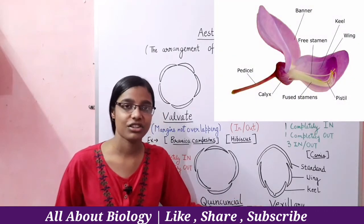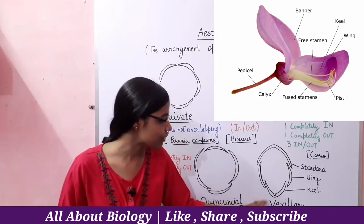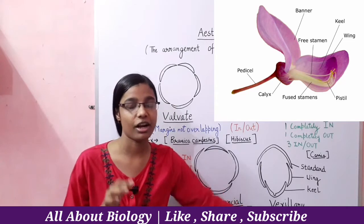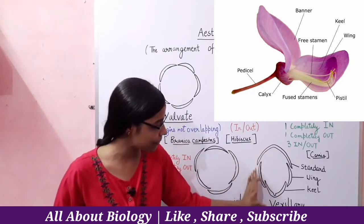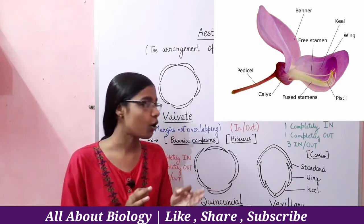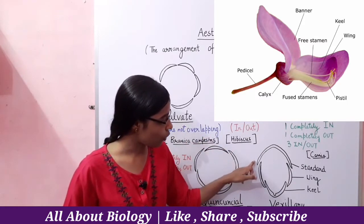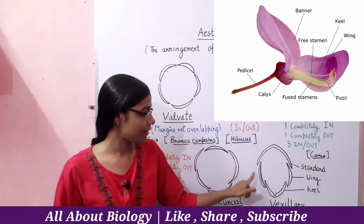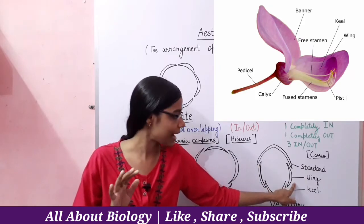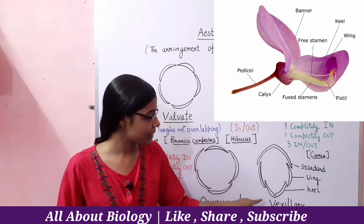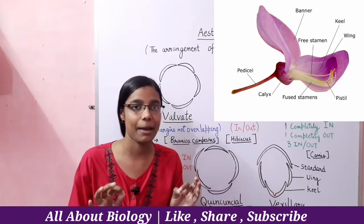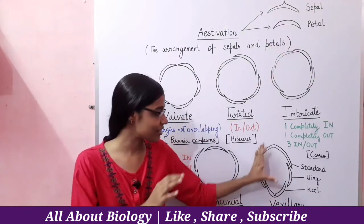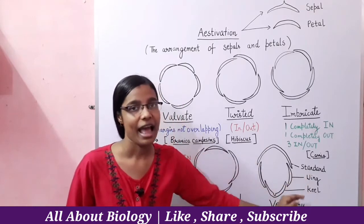Finally, let's talk about Vexillary Estivation. Vexillary Estivation belongs to the family Papilionaceae. You will see this in the case of peas. The characteristic feature is the shape of the corolla. There is a large structure called the standard, two side structures called wings, and two fused structures called the keel. So in Vexillary Estivation, you will see three structures: standard, wing, and keel.